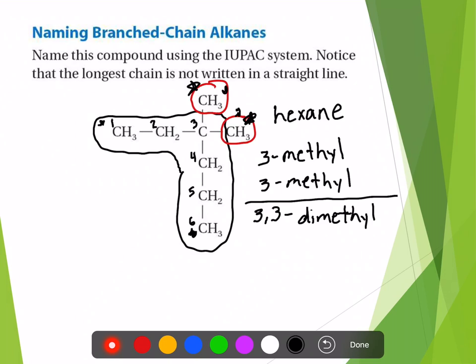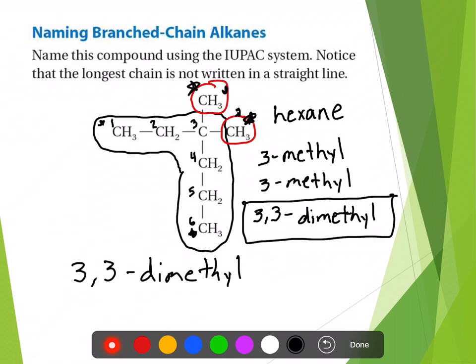Rule number five says write the name. We're going to do the whole name now by first naming the attached groups with the carbon atom location number as a prefix — so that whole thing goes first: 3,3-dimethyl. The second part says the final part of the name is the name of the parent compound, which is hexane. So the name of this compound is 3,3-dimethylhexane.